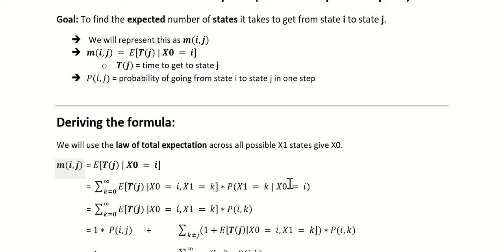That looks like this: the expected amount of time to get to state J, given X0 equals I and X1 equals K, times the probability that X1 equals K given X0 equals I. The next step is a little tricky. If X1 equals J, the expected time is going to be equal to 1, because X0 equals I and X1 equals J — that took just one step to get to state J. So that's 1 times P-I-J.